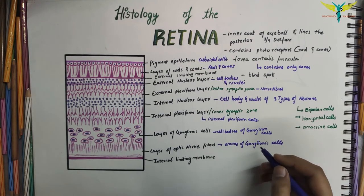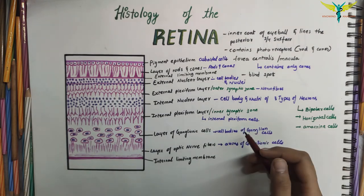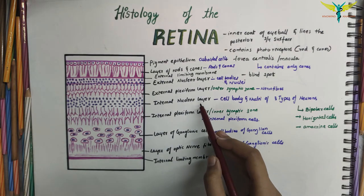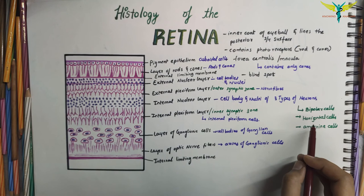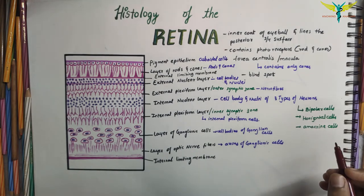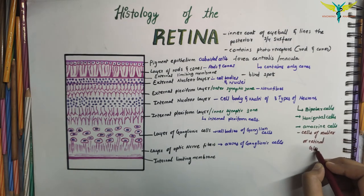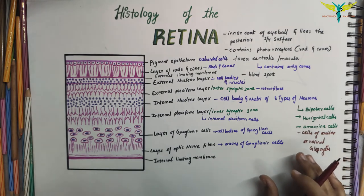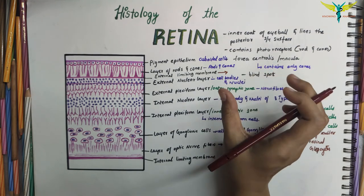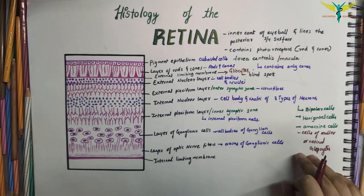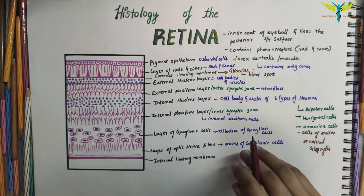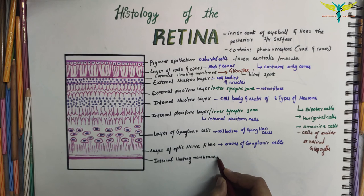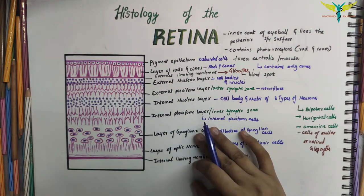The retina consists of an external limiting membrane and an internal limiting membrane. The internal nuclear layer, apart from containing bipolar, horizontal, and amacrine cells, also contains the nuclei of the retinal gliocytes, or cells of Müller. These cells give off various processes of protoplasm that extend almost the whole thickness of the retina. The processes of adjoining gliocytes meet to form the external limiting membrane, and internally these gliocytes extend to the inner surface of the retina to form the internal limiting membrane, which separates the retina from the vitreous.